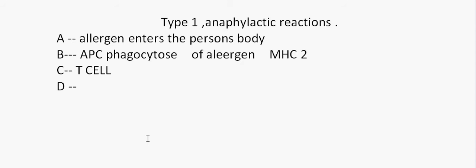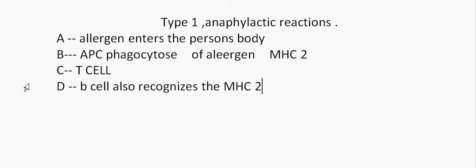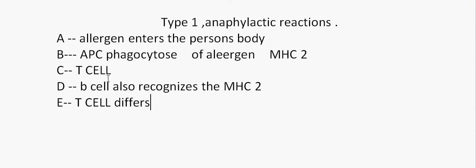Step D shows that the B-cell also recognizes the MHC2 molecules which have been presented by the antigen presenting cells. Step E denotes that the T-cell does not just differentiate — it proliferates into its own subset, that is, T helper 2 cells. We've now covered all processes from A through E.